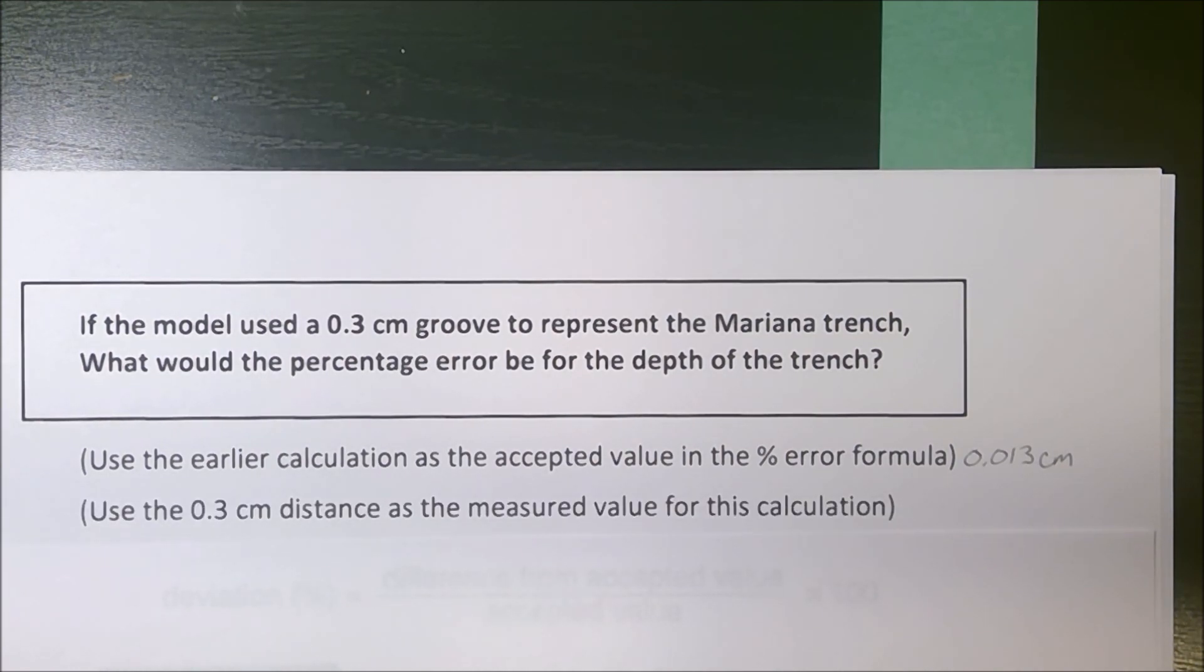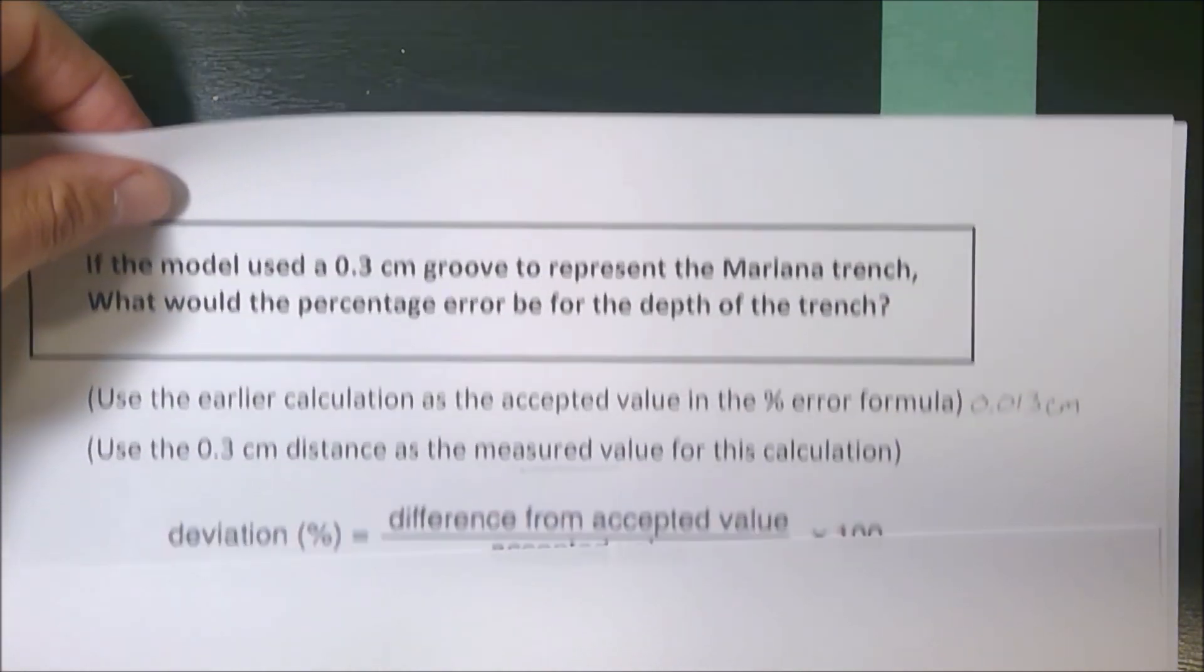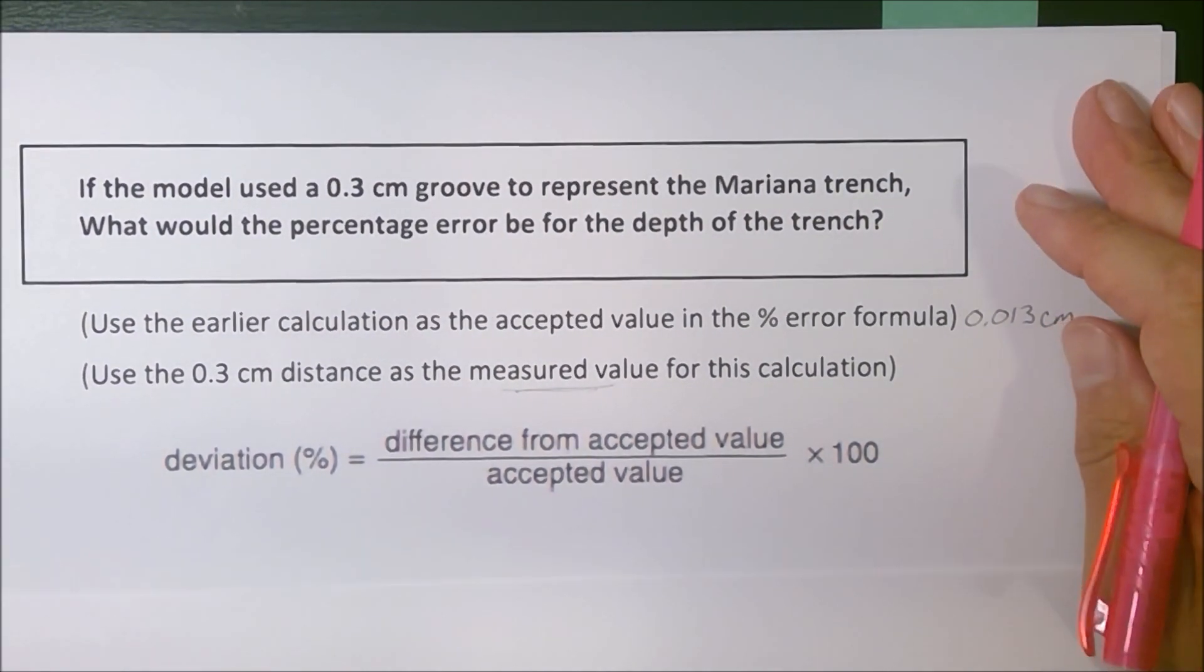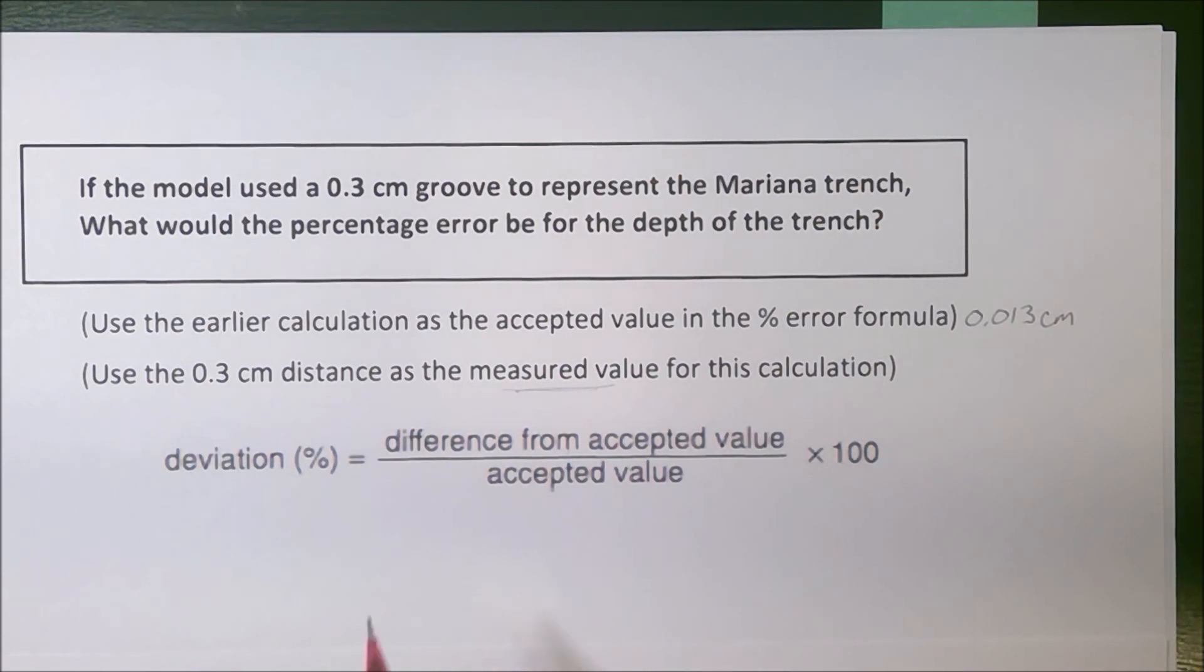So we're going to use the earlier calculation as the accepted model. What we had there was it should have been 0.013 centimeters. The 0.3, what they're using in the model, we're going to use as the measured value, and then we'll plug it into the percent error or percent deviation formula.